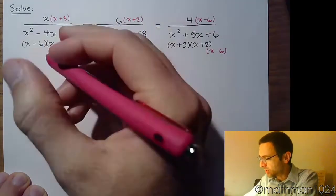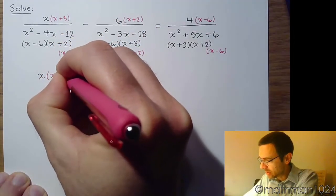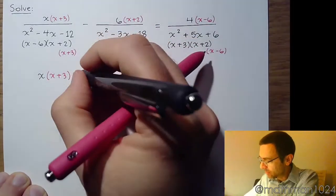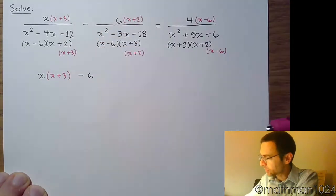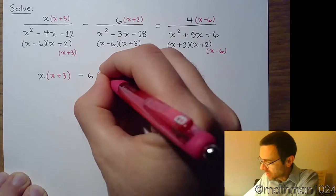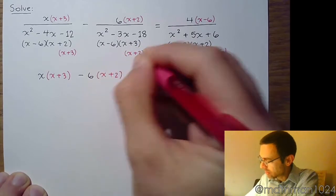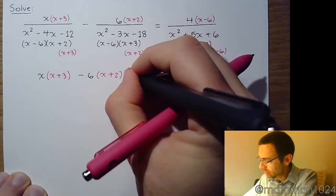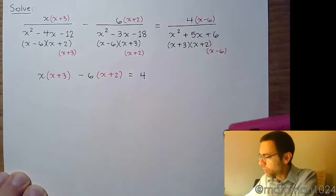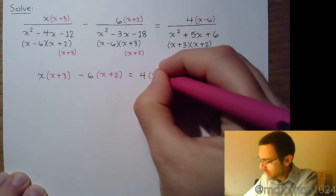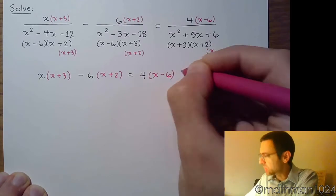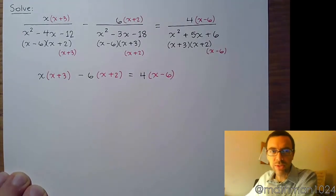This is x times x plus 3 minus 6 times x plus 2 is equal to 4 times x minus 6. I keep the colors and everything the same. I don't do any multiplication until the next step.